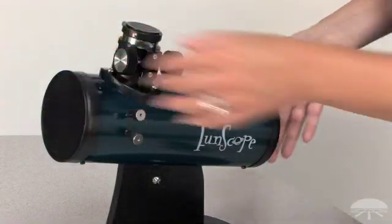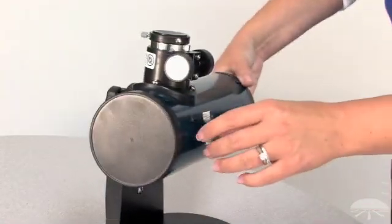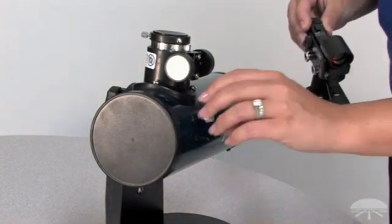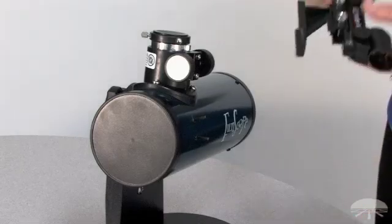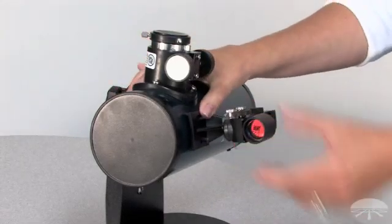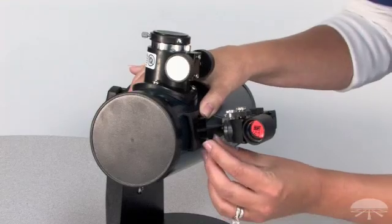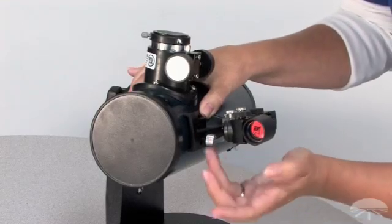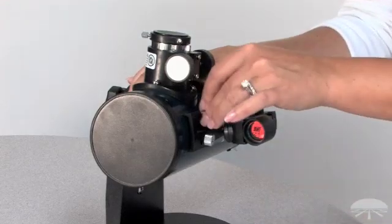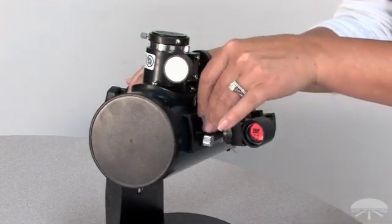This is the front of the scope, this is the back of the scope. To attach the red dot finder, simply unscrew the thumb screws. Attach the bracket, holding your thumb. You want to make sure that you screw both thumb screws back on tightly.